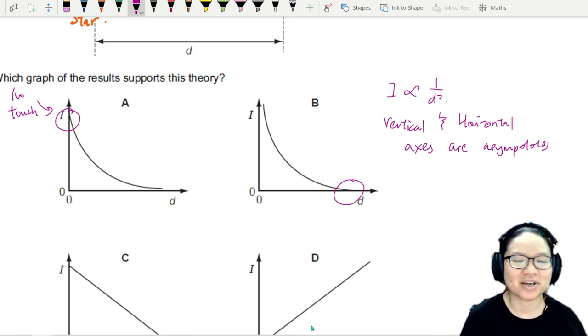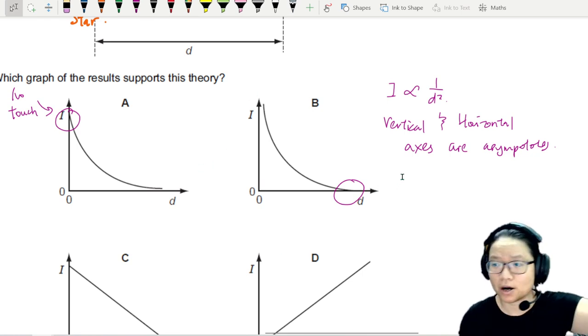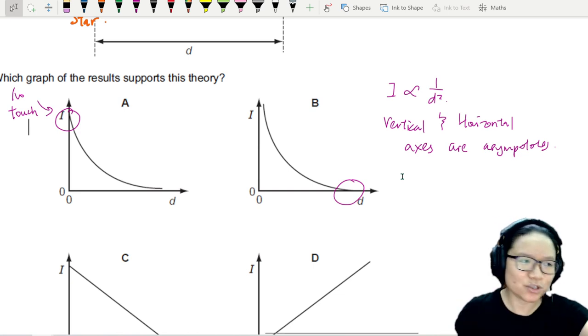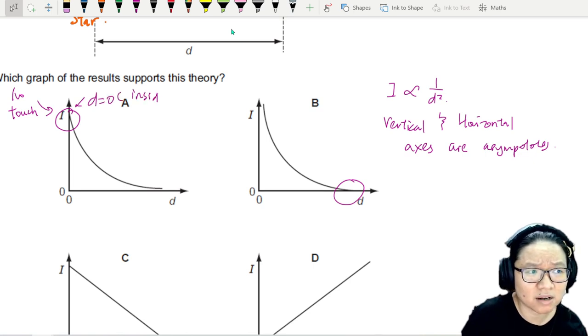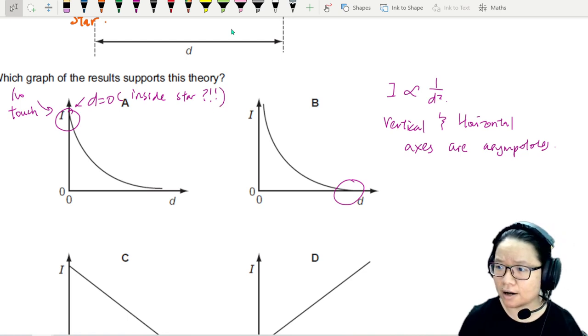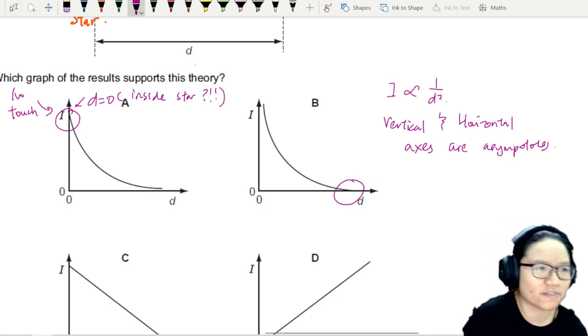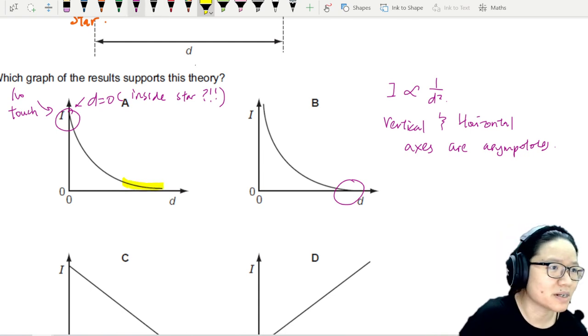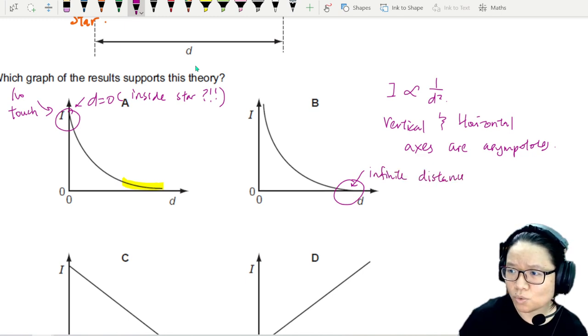So now I need you to be very careful when it comes to this kind of curve. If A and B is wrong, you may be thinking, miss, I thought inverse square law must decrease with distance. You are right. But it intersects with all these axes. So if I is inversely proportional to D², the vertical and horizontal axes are asymptotes. Let me move this a bit. Vertical and horizontal axes are asymptotes, meaning you cannot touch. No touching. No touch.